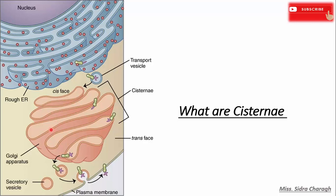Whereas in the case of cisternae, you can see here that cisternae are the flattened membrane discs that occur in the endoplasmic reticulum as well as the Golgi apparatus. Generally the Golgi apparatus contains two to thirty cisternae; however, most Golgi apparatus contain six cisternae structures.